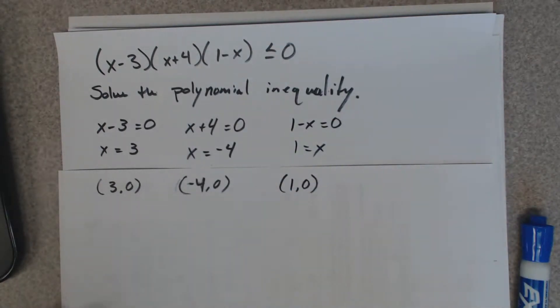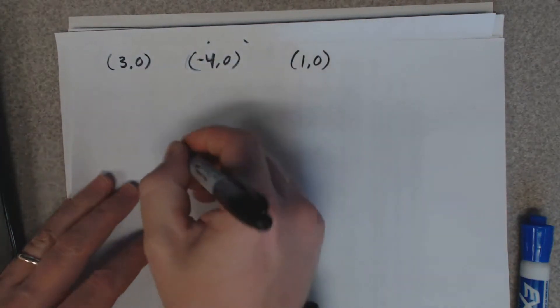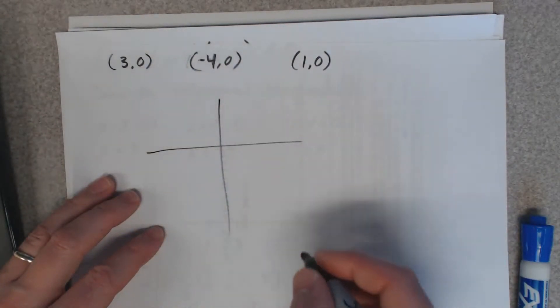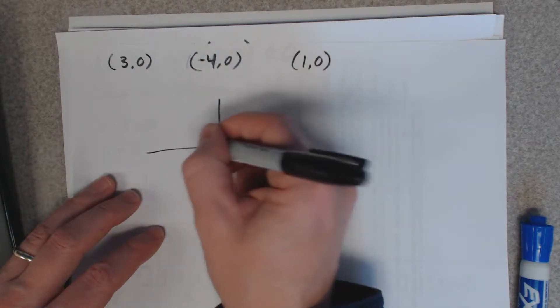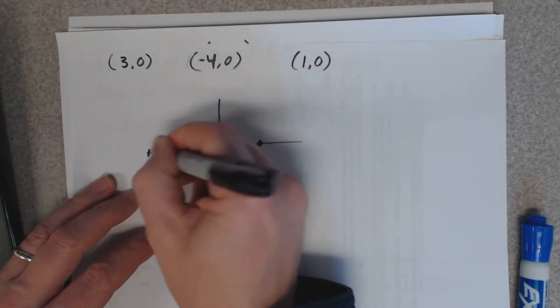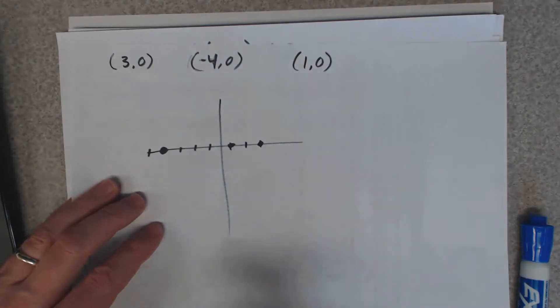So what you do is you just draw it really roughly by hand. So here's one, two, three, so there's an x-intercept. There's an x-intercept. One, two, three, four, there's another x-intercept.